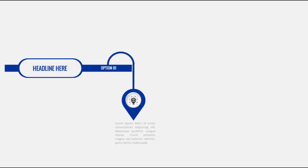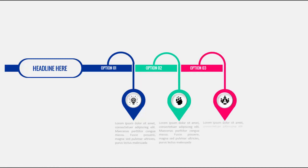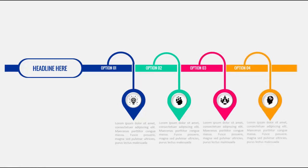Hello and welcome to my YouTube channel PowerPoint University. In this tutorial I'm going to show you how to create a four-step infographic slide in PowerPoint. When I click it will show you the headline, then the first option will come where you can see the icon and the text, then the second, third, and fourth options. If you have enough space you can add more, or you can add two or three also.